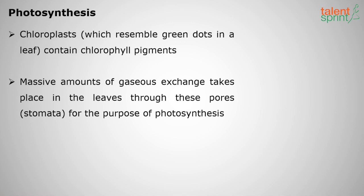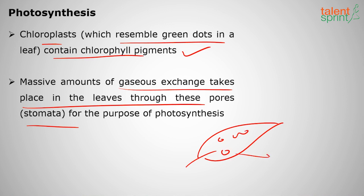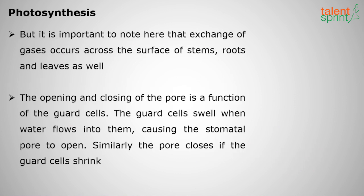Photosynthesis is performed because of the green pigment called chlorophyll — if it is not present, plants cannot perform photosynthesis. Chloroplasts, which resemble green dots in a leaf, contain these chlorophyll pigments. Massive amounts of gas exchange takes place in the leaves through pores called stomata. How water, oxygen, and CO₂ move in and out of the plant — in the night plants release CO₂ — all of this happens through these pores called stomata. Note that gas exchange also occurs across the surface of stems and roots, not only leaves.